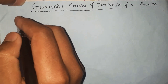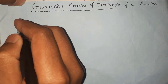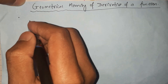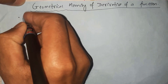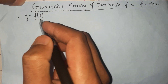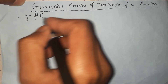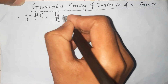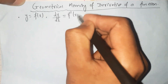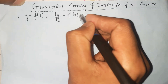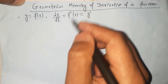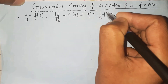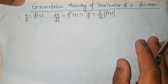Let's have a quick recap on the topic — the meaning of the derivative of a function, or the definitions of the derivative of functions. The derivative of a function y equals f of x is denoted by dy/dx. It is also denoted by f prime of x, or y prime. We can also write it as d/dx of f of x. These are the notations for the derivative of the function y equals f of x.